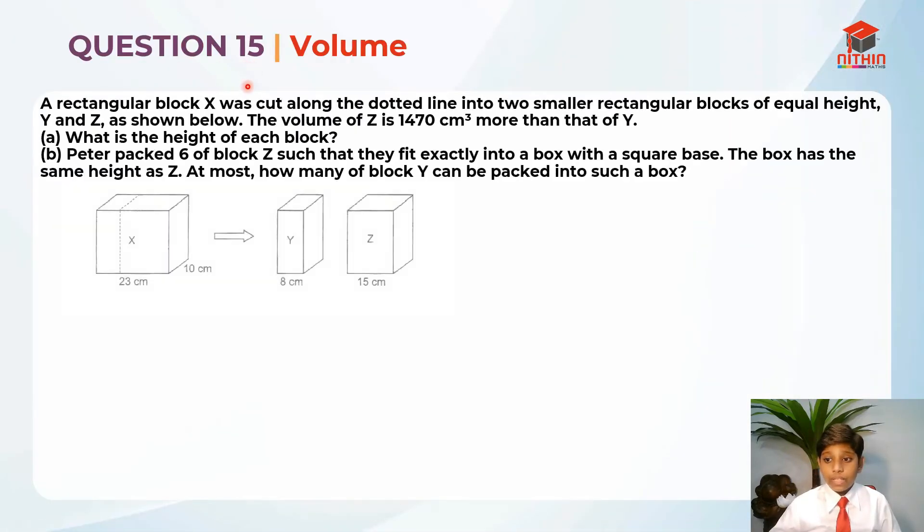So this is question 15, it is testing us on volume. So let's read the question first. Rectangular block X was cut along the dotted line into two smaller rectangular blocks of equal height, Y and Z as shown below. The volume of Z is 1470 cm³ more than that of Y.